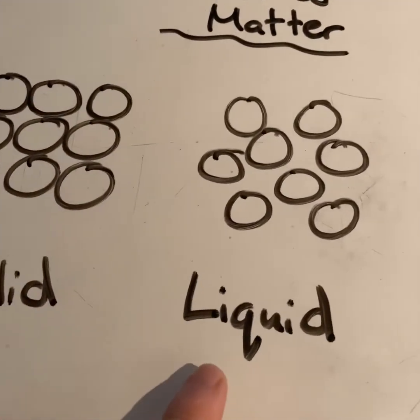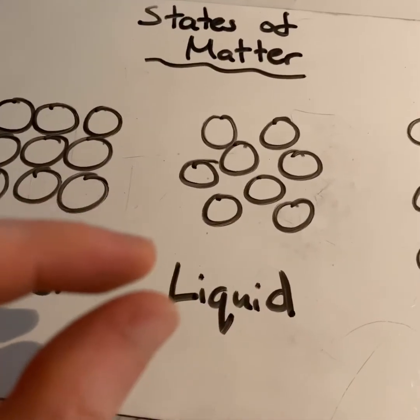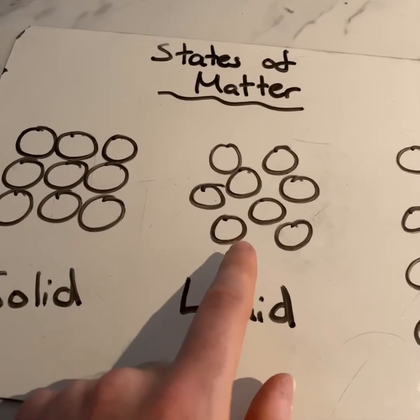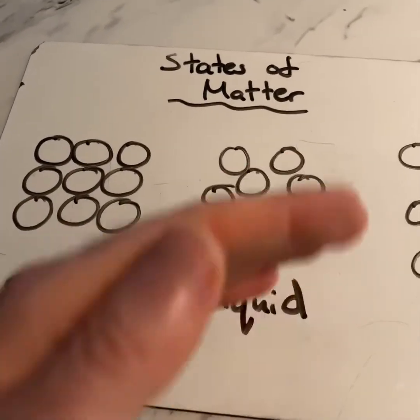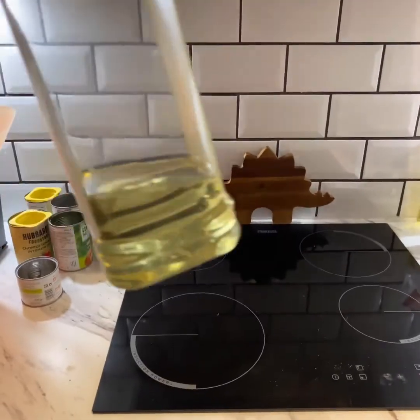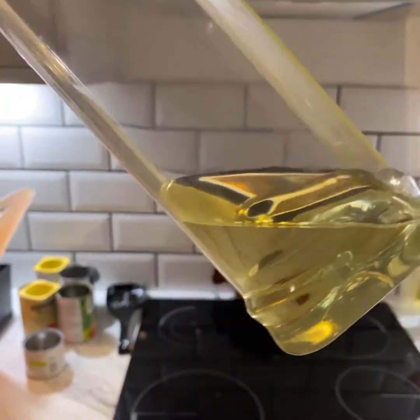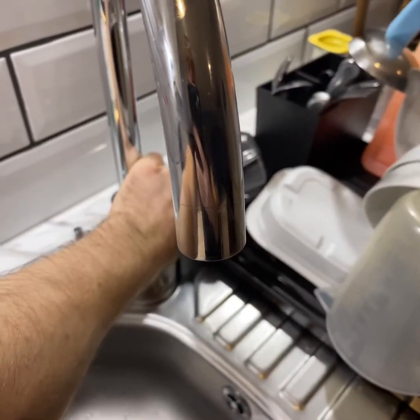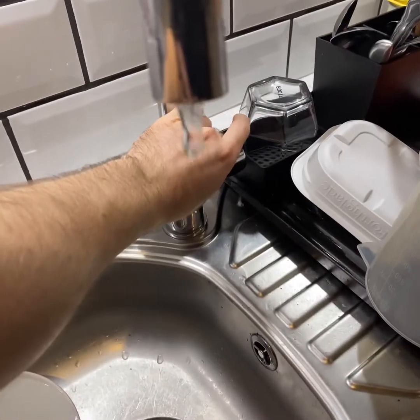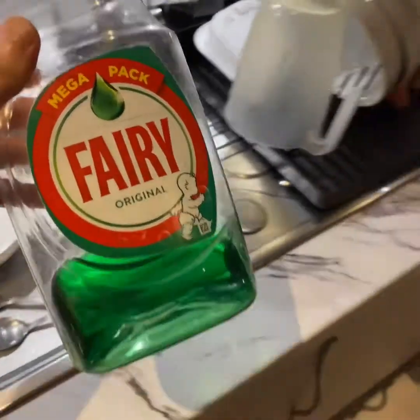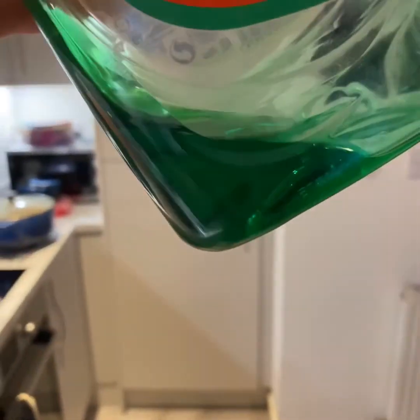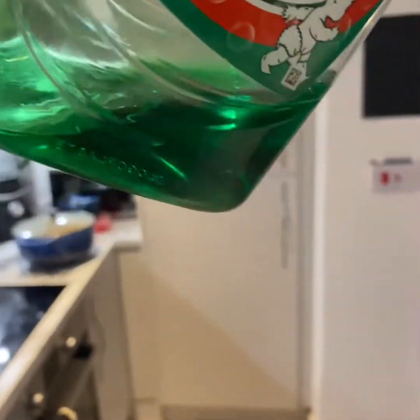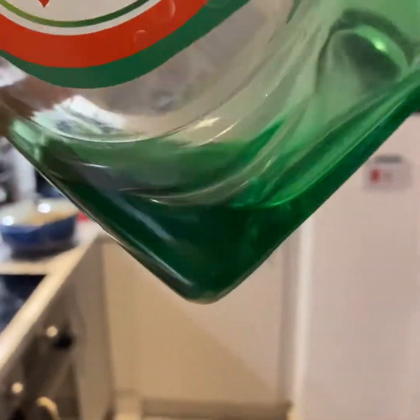Now we're going to move on to liquid. You can see that the atoms — those tiny little bits that make up liquid — they're looser; they're not as tightly packed as they would be with a solid. And that means that liquids can move easily; they flow. I've got some liquid here: this is olive oil. You can see it's a liquid — it flows and it moves. Possibly the most obvious liquid you might think of is water. But next to my sink I've also got some fairy liquid. Again this is liquid — the particles and atoms within it are not as tightly packed together, and so the liquid moves around.